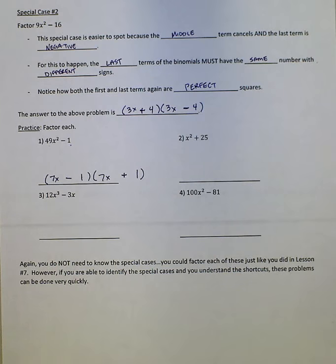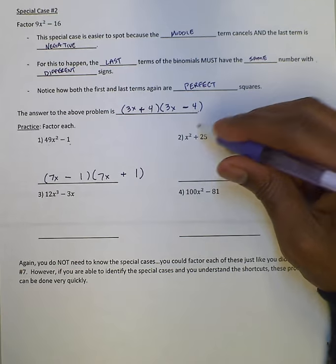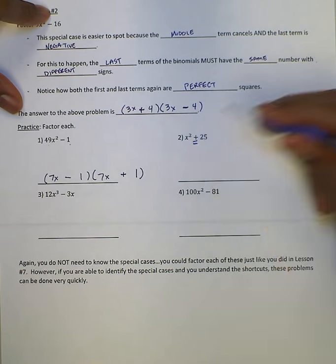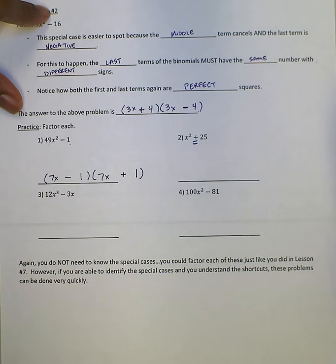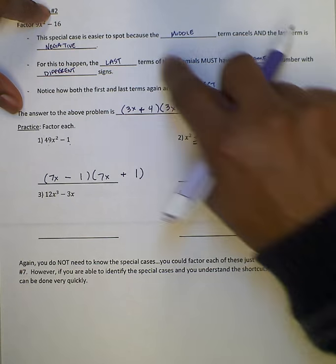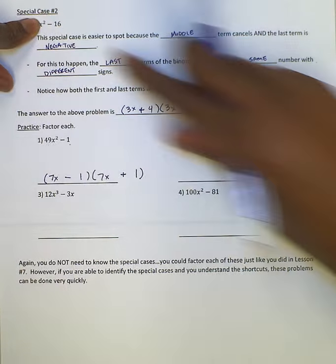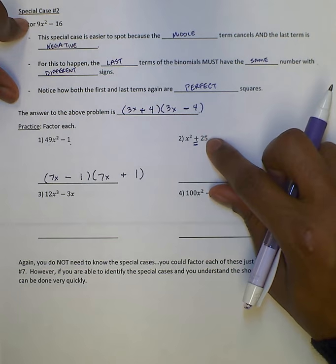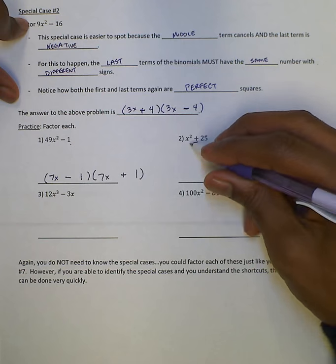For number 2, notice here, and this is important to see, this is a plus sign between the two. Plus sign between the two is not the same situation, right? Up here we have minus. When it's minus, we have a difference of squares.